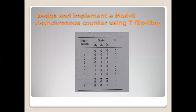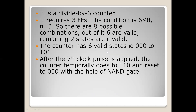In this session we are going to discuss the design and implementation of a mod 6 asynchronous counter using T flip-flops. A mod 6 asynchronous counter is also called a divide-by-6 counter — it has six stable states, counting from 000 to 101, after which it resets back to 000. Since there are three digits, we use three flip-flops.